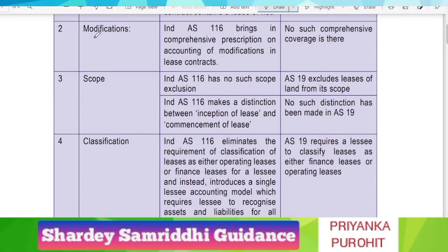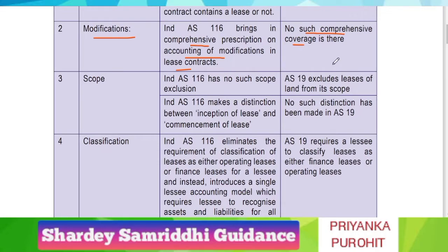The next key point of difference is modifications. In AS 19, there is no such comprehensive coverage. IndAS 116 brings in comprehensive prescription on accounting of modification of a lease contract. This means that if a lease was initially an operating lease and is now converted into a finance lease, AS 19 does not provide any comprehensive coverage but IndAS 116 provides comprehensive coverage of accounting treatment in case of modification of a lease contract.